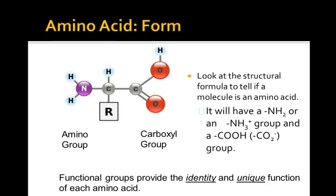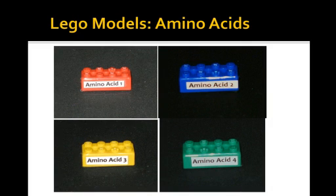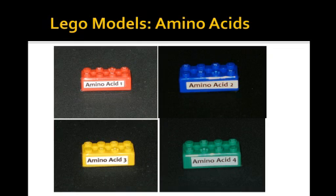There's a lot of variability in the building blocks, which makes sense because we have ligaments, tendons, muscles, hair, and skin — all of those need various kinds of proteins. Going back to the Lego concept, if you think of Legos as amino acids, there's a red, a blue, a yellow, and a green Lego labeled amino acids one through four. We could connect them in many different combinations.